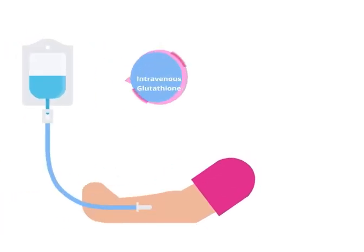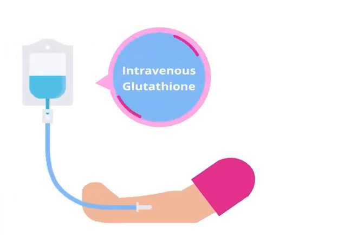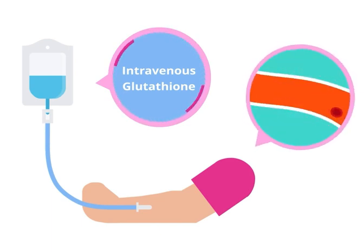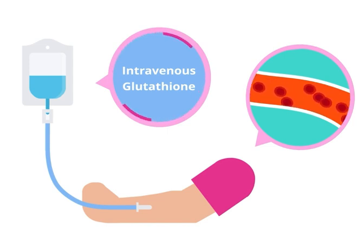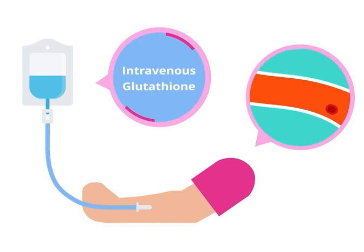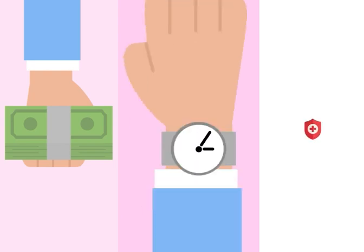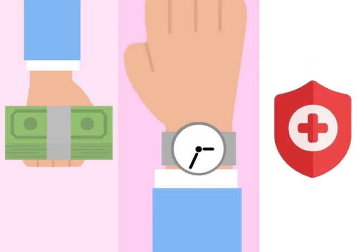This is why intravenous glutathione is so popular rather than reduced glutathione capsules — IV glutathione is directly absorbed in the bloodstream, so you get the maximum potency of 100% absorption. However, this route is more expensive, inconvenient, and involves some health risks.